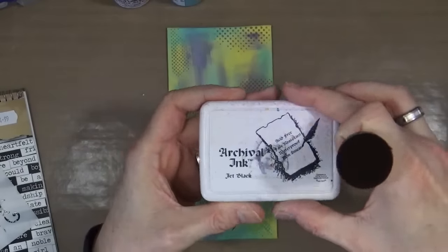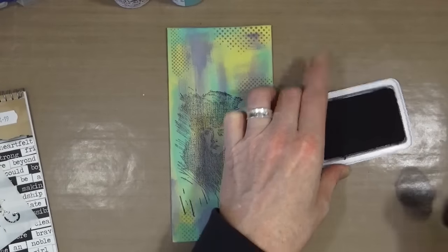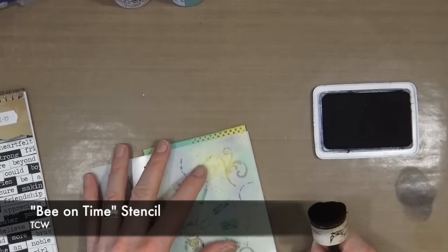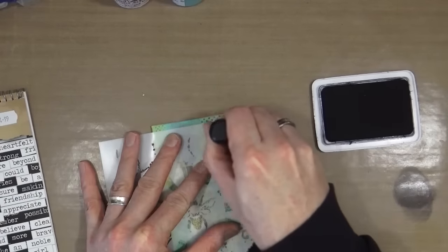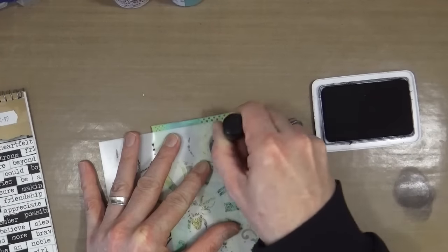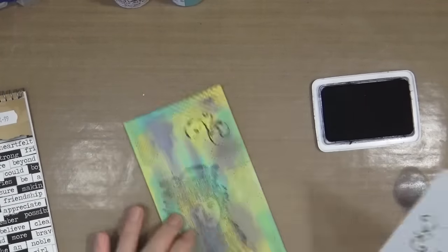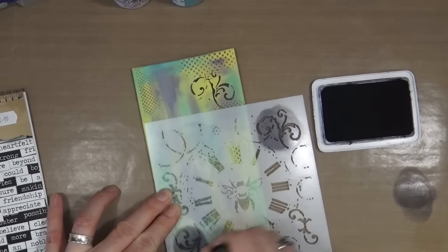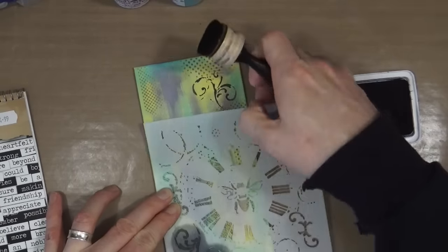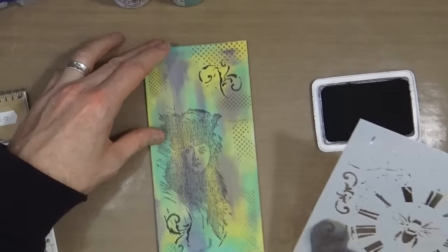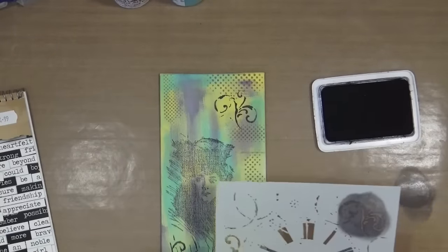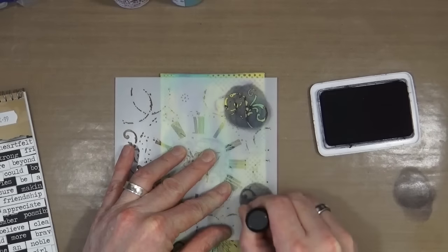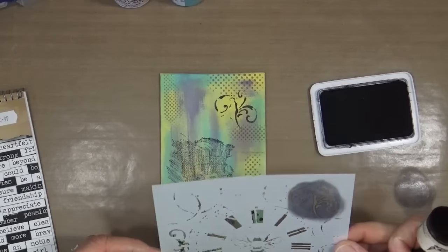Next up I'm bringing out the Jet Black archival ink. Mine's pretty old now—I think I probably need to replace it. This is the Beyond Time stencil by TCW, and I'm just going to use some of those scroll effects from this stencil and place those around the outside just to add a little bit more depth. I quite like the B, so I thought I may just add a little hint of that in the bottom right-hand corner too.